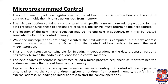A micro instruction contains bits for initiating micro operations in the data processor part and bits that determine the address sequence for control memory. The next instruction address is found from the next address generator, which is also called the micro program sequencer, as it determines the address sequence read from control memory. The typical functions of the micro program sequencer are: incrementing the control address register by one, loading an address from control memory into the control address register, and transferring an external address or loading an initial address to start the control operation.